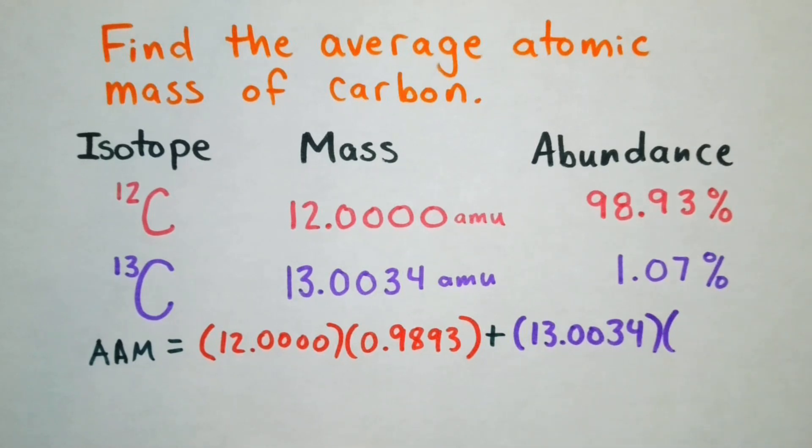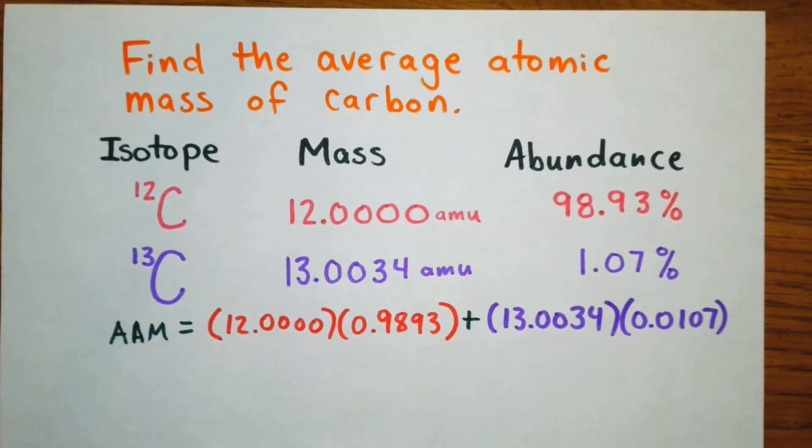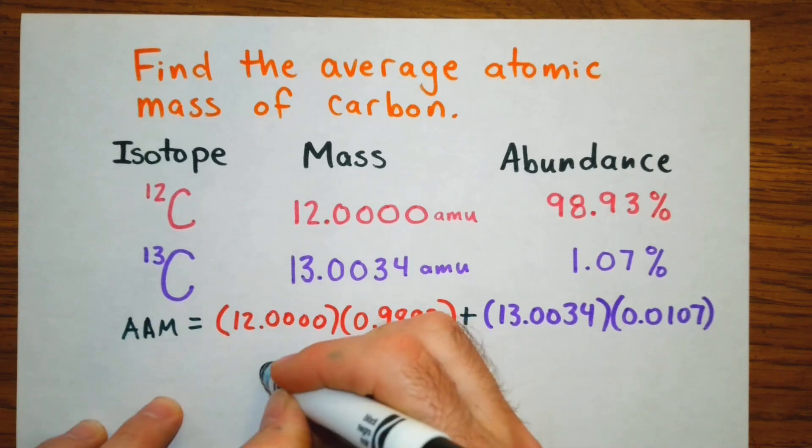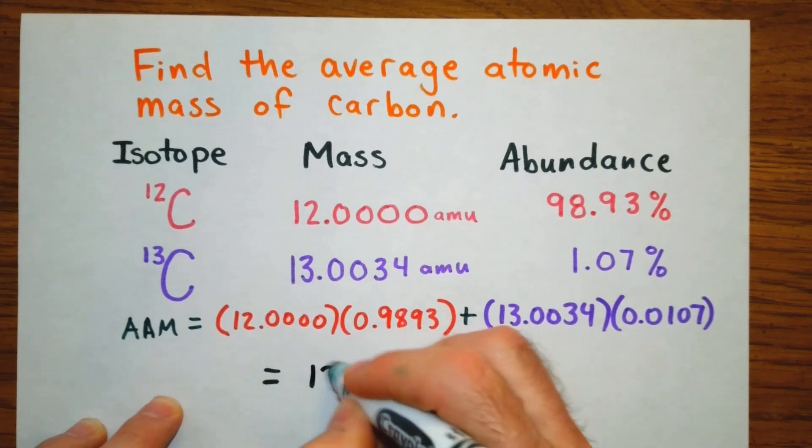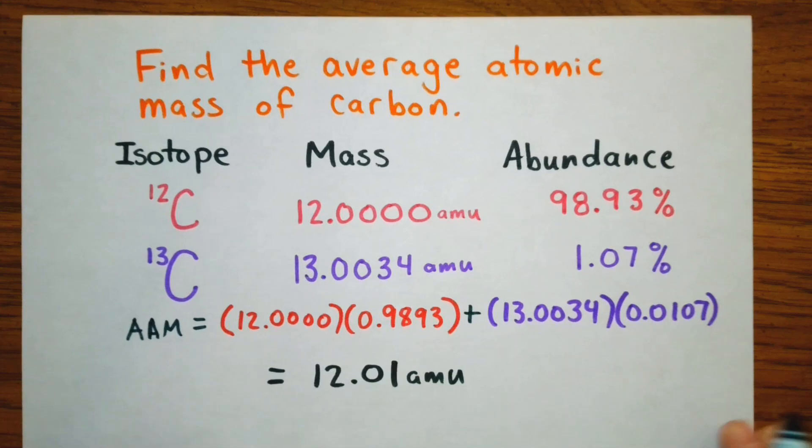And our 1.07% in decimal form, 0.0107. And what we'll get when we put that into a calculator is an atomic mass of 12.01 atomic mass units. I round that up to 2 decimal places.